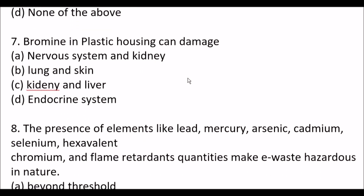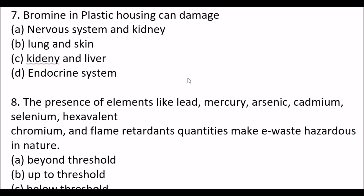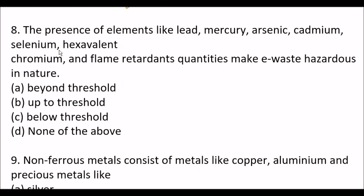Next question: Bromine in plastic housing can damage - Option A - nervous system and kidney, Option B - lung and skin, Option C - kidney and liver, Option D - endocrine system. The right answer is Option D - endocrine system. Next question: The presence of elements like lead, mercury, arsenic, cadmium, selenium, hexavalent chromium, and flame retardants in quantities that make e-waste hazardous in nature - Option A - beyond threshold, Option B - up to threshold, Option C - below threshold, Option D - none of the above. Right answer is Option A - beyond threshold.